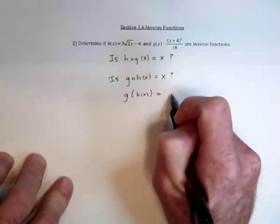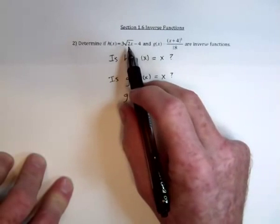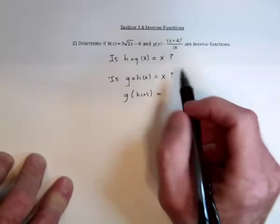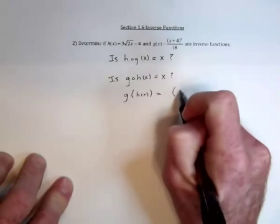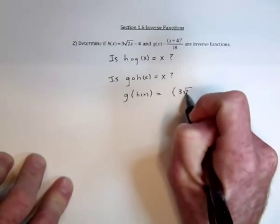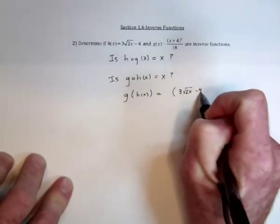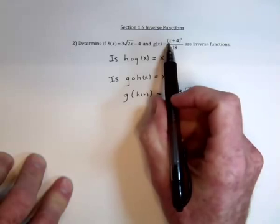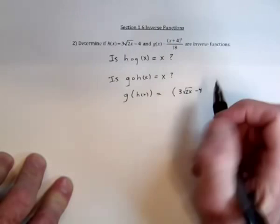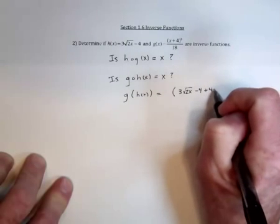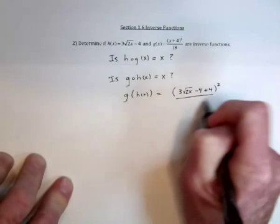So it's going to be, this substitution here will be parentheses at 3, the square root of 2x minus 4, that takes care of this part x, and then plus 4, and squared, and divided by 18.